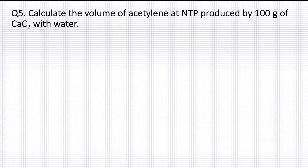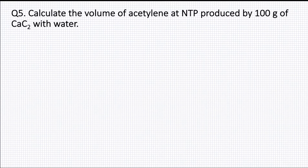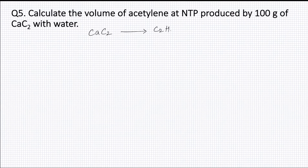Question 5. Calculate the volume of acetylene at NTP produced by 100 grams of CaC₂ with water. Now CaC₂ reacts with water to form acetylene, i.e. C₂H₂. Writing the main reactants and products: CaC₂ forms C₂H₂.